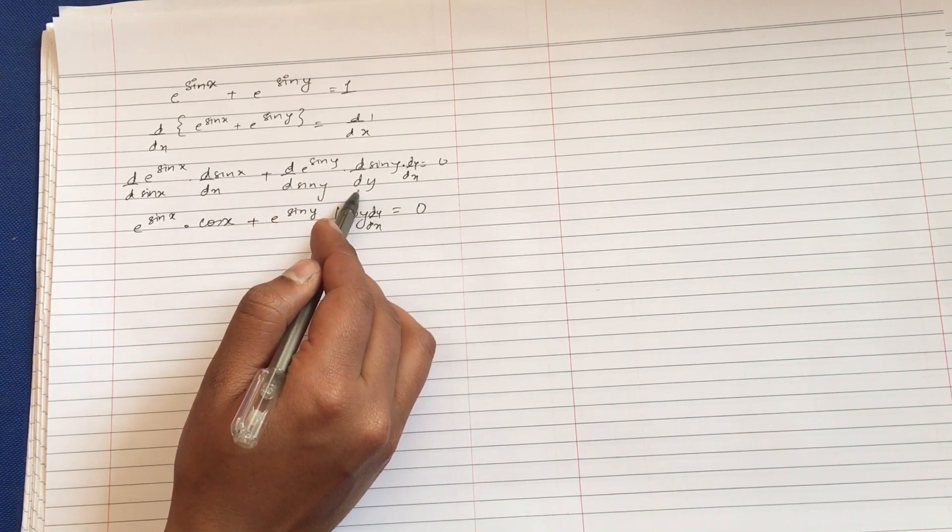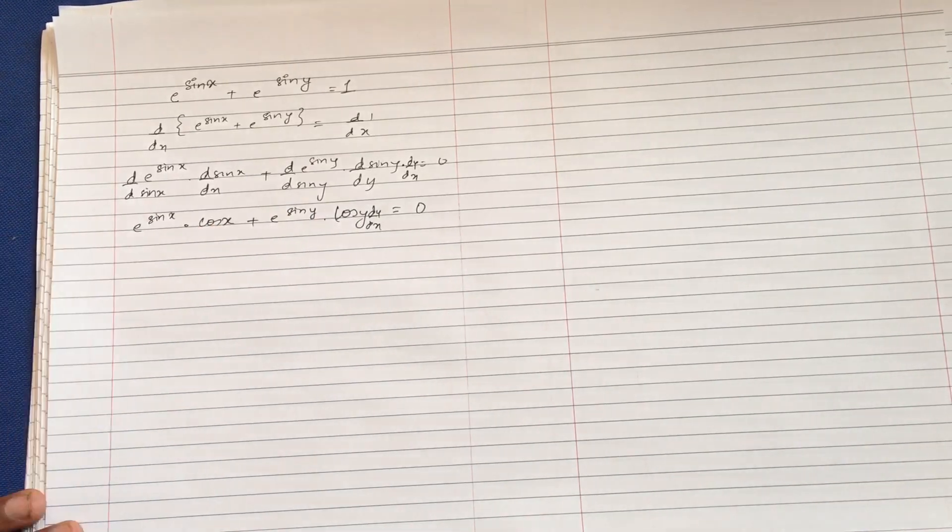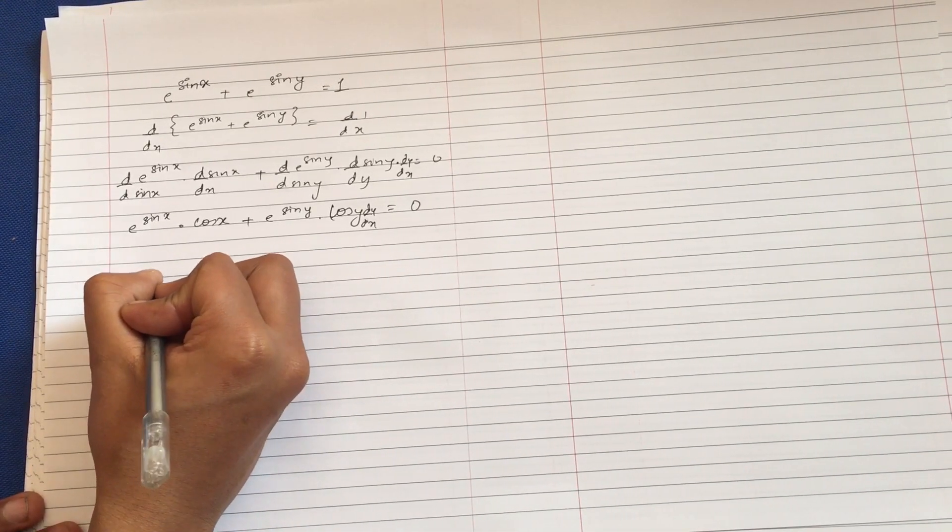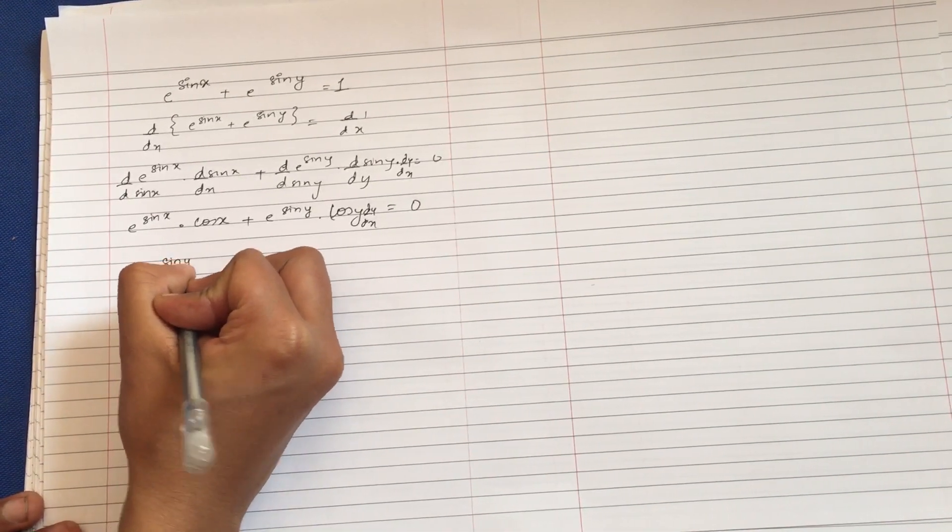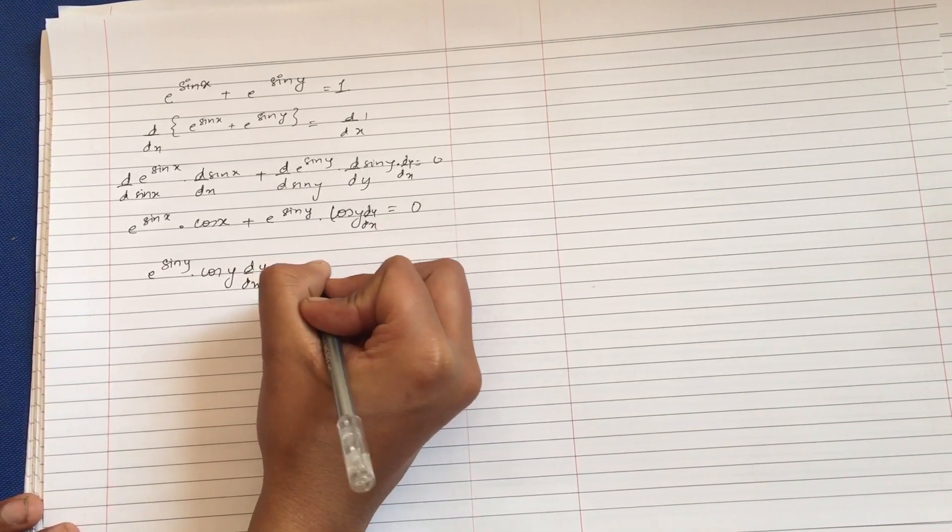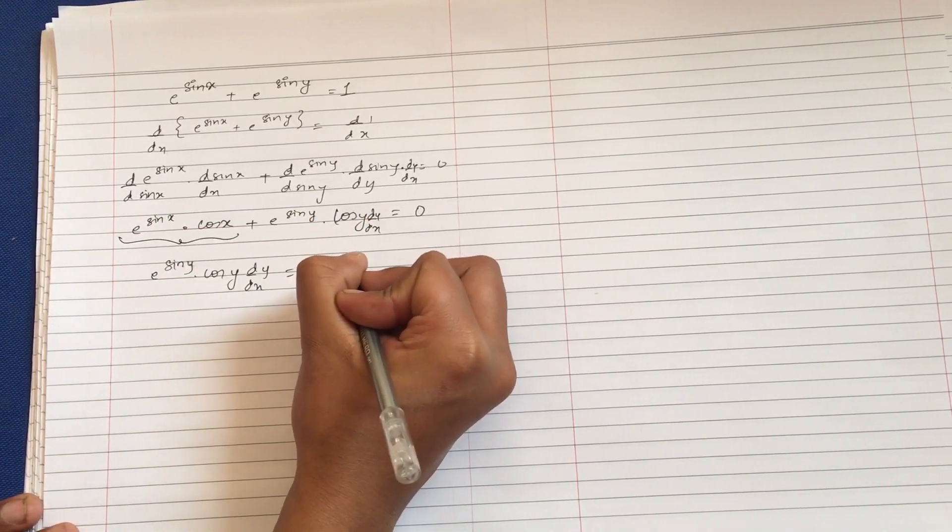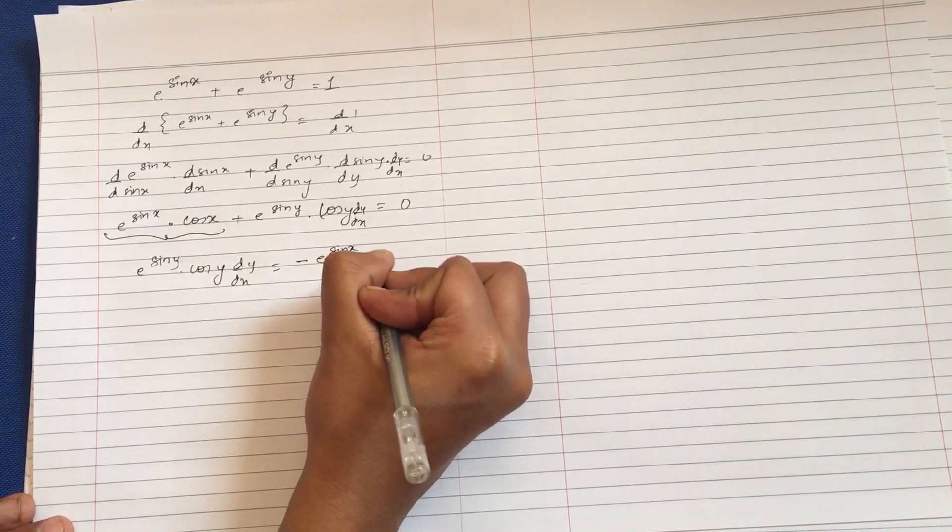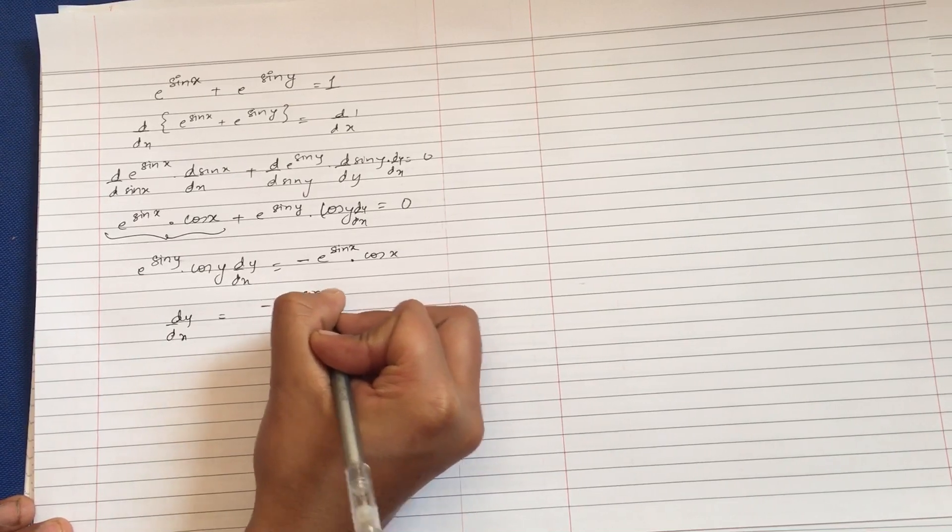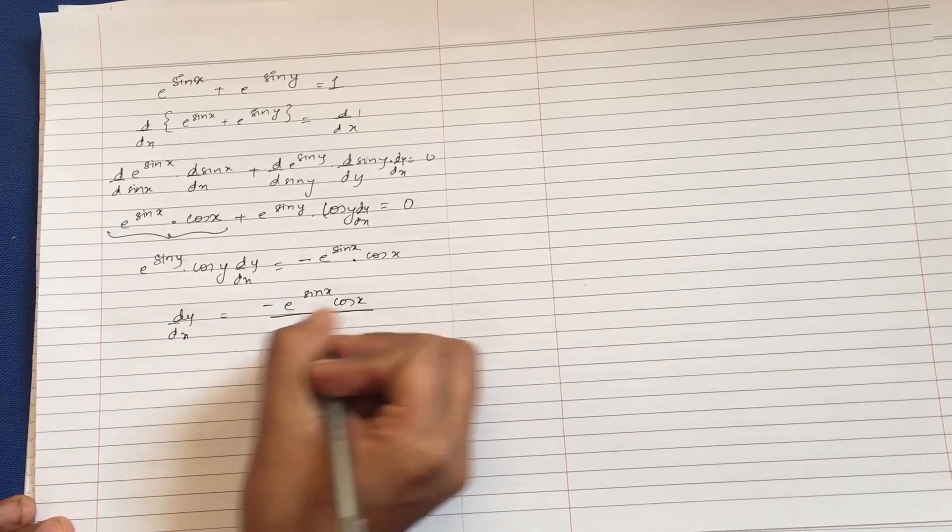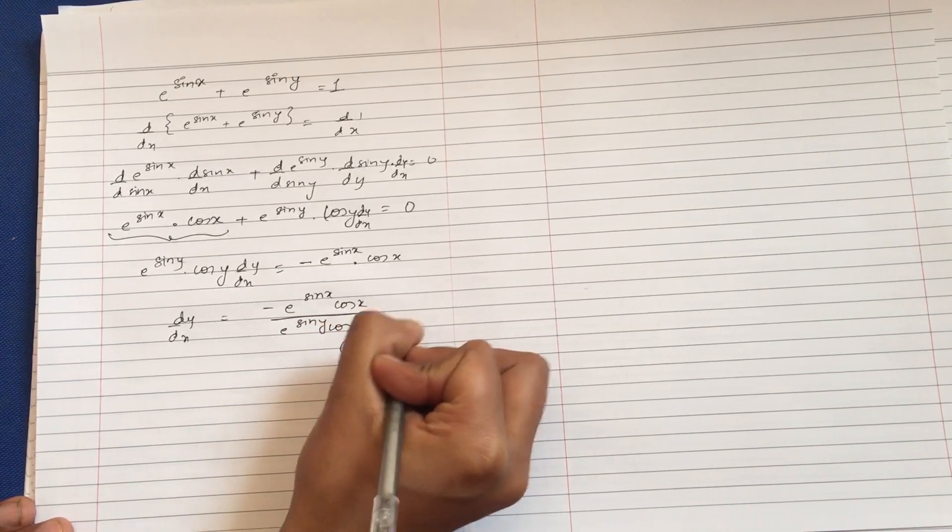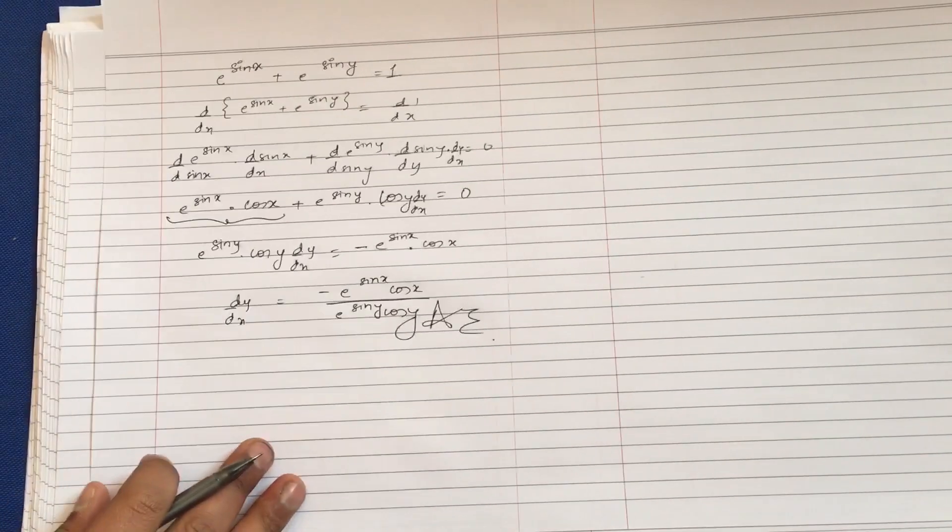So, e to the power sin y cos y dy by dx equals minus e to the power sin x cos x. Now dy by dx equals minus e to the power sin x cos x divided by e to the power sin y cos y. And this is your answer.